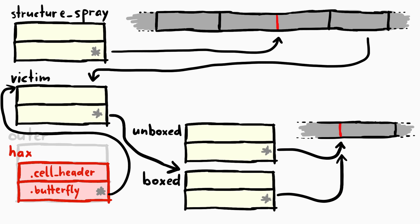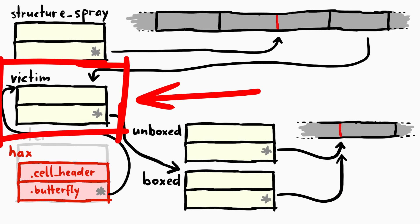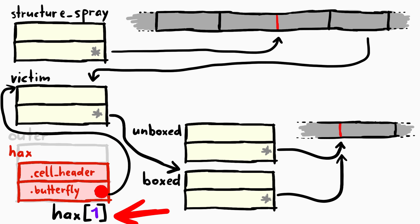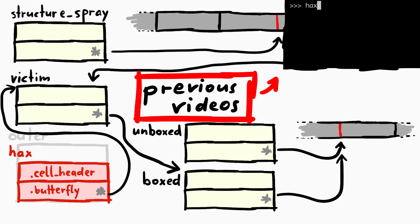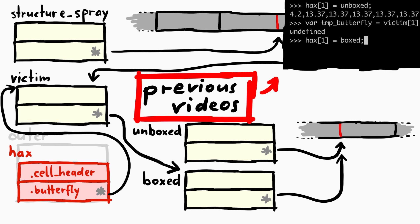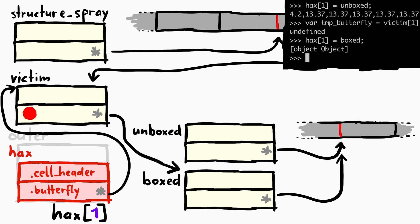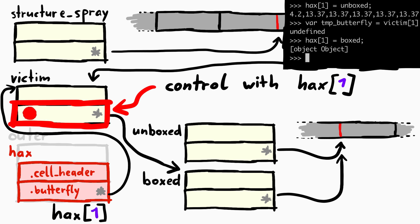In our memory picture we have victim here. And maybe you remember that we used hax, which has its butterfly pointing to the victim and accesses the second element with brackets 1. So hax[1] will actually be this memory cell — the butterfly address of the victim. We used that to point the victim butterfly to unboxed or boxed before, to screw up their butterfly. With hax[1] we can control the butterfly of victim.